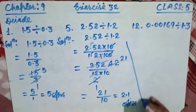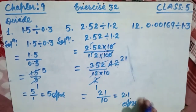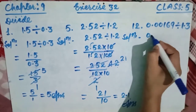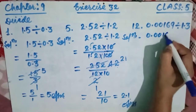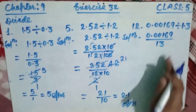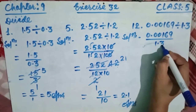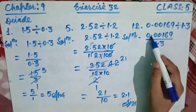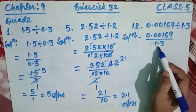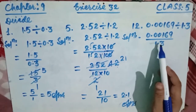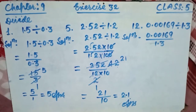Now question number 12. Write the question: 0.00169 divided by 1.3. In the numerator, after the decimal there are five digits. In the denominator, after the decimal there is only one digit. So these two decimals will not cancel directly.